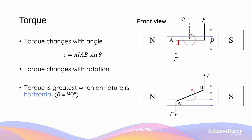As the armature continues to rotate, this angle becomes greater than 90 degrees. Since the angle theta changes with rotation, the magnitude of torque also changes with rotation.